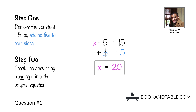This allows us to negate the constant. Negative 5 plus 5 would be 0, and x plus 0 is just x, so we've successfully isolated x on one side. Remember, you must keep the equation balanced — whatever you do to one side of the equal sign you must do to the other side. That leaves us with 15 plus 5, which has a value of 20. So the answer to question number one is x is equal to 20.